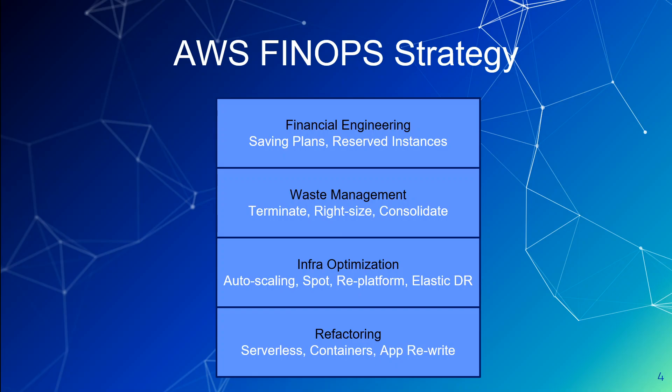Any organization which is looking to stay with AWS for one to three years should go with a savings plan for compute or any other resources they are using, like Kubernetes. You could also utilize reserved instances, but I would suggest first looking at the savings plan.